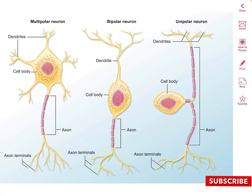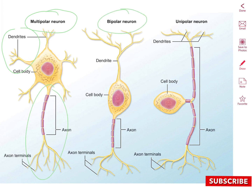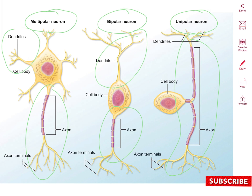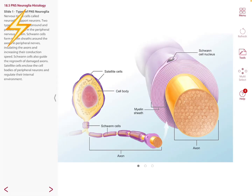Not all neurons are similar or carry the same messages; they vary in size, shape, and the pattern of dendrites and axons. Multipolar neurons have several dendrites and one axon. Bipolar neurons have one dendrite and one axon and are located in the eye, ears, and olfactory structures. Unipolar neurons have dendrites and axons fused together and function for touch, pressure, and pain. However, multipolar neurons are the most numerous in our nervous system.